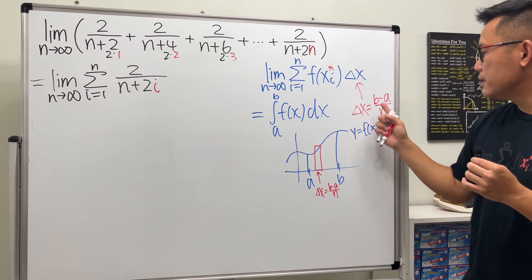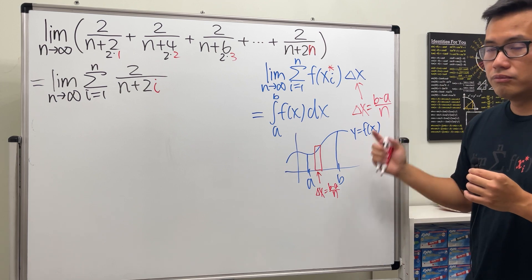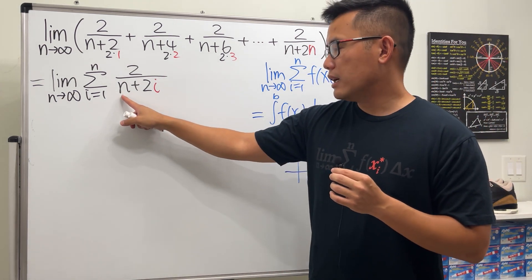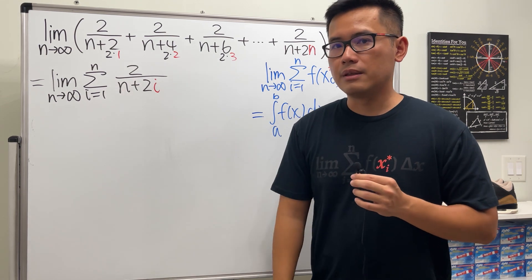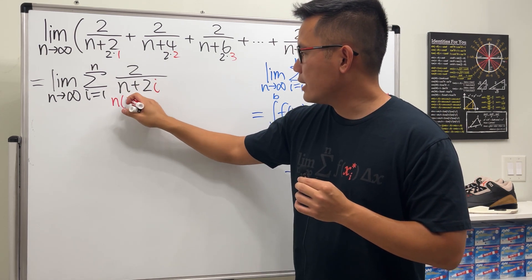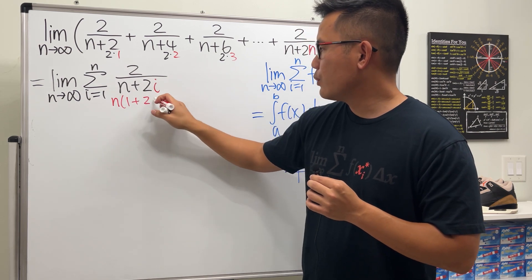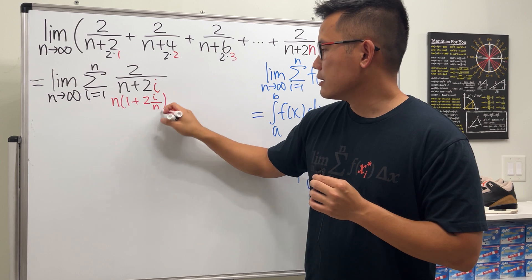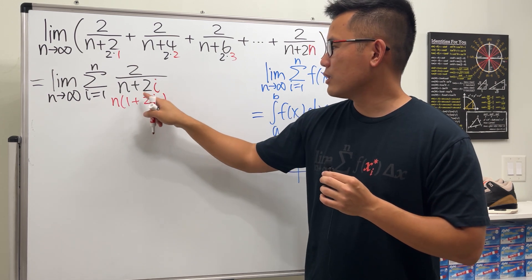But more importantly though, we should be able to see the delta x first. And for delta x, we better see the over n. So how can we make that happen? Here is the n. Let's factor out the n. So when we do so, we are just going to get n times 1 plus 2, and then here we have the i and then over n.